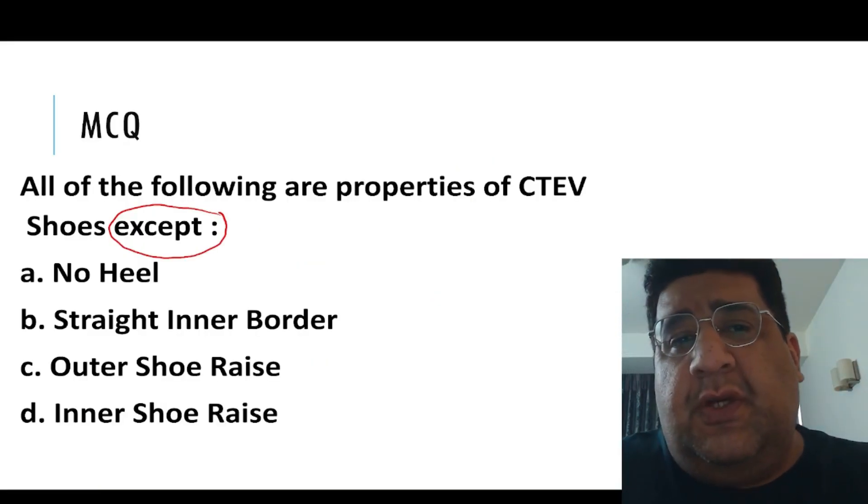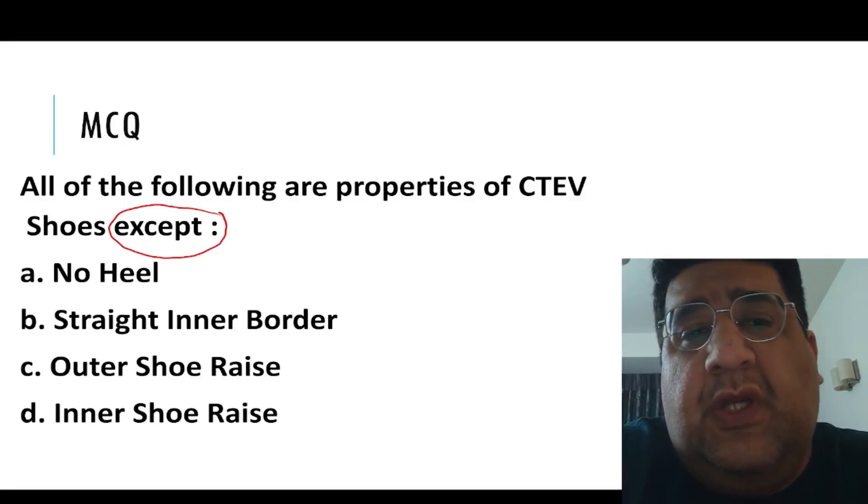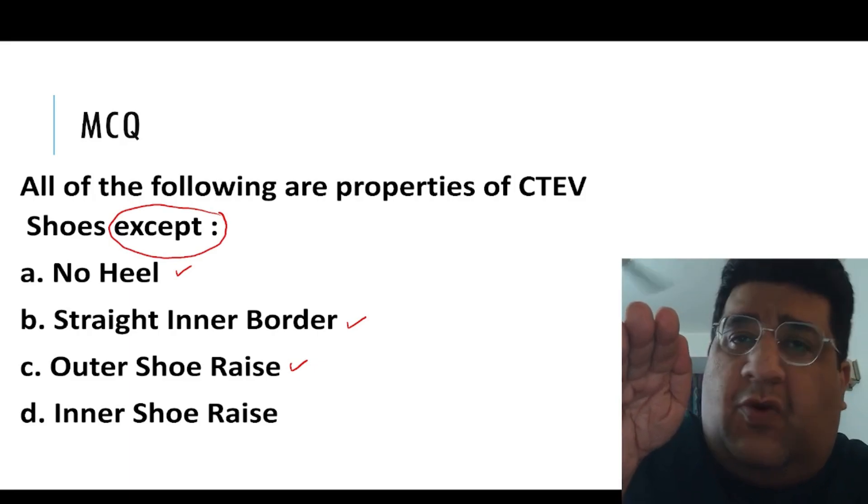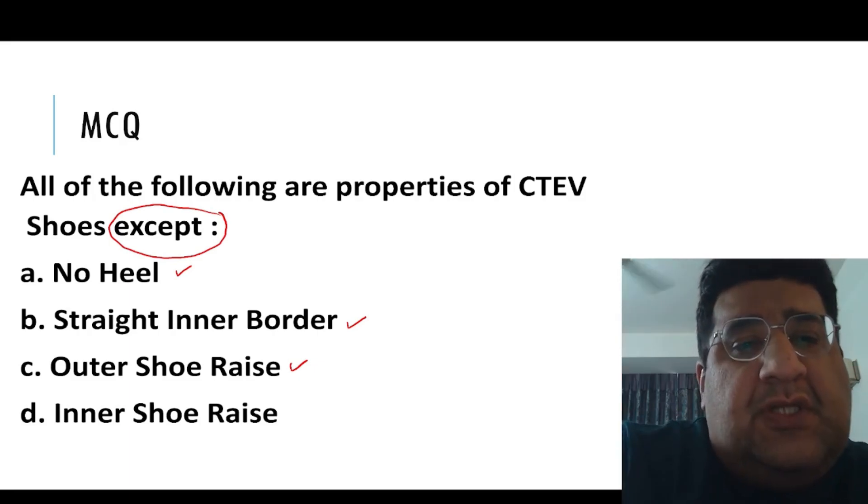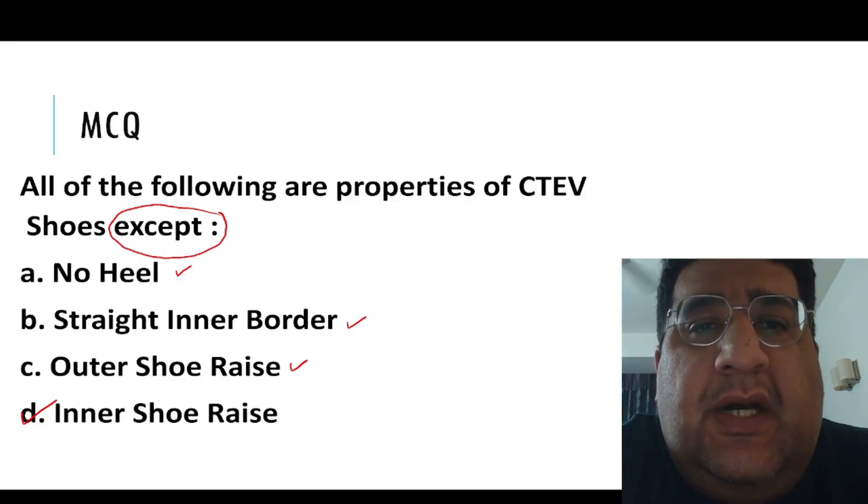Now if we go back to the question, they asked which is NOT a property of CTEV shoe. Well, no heel is a property. Straight inner border is a property. Outer shoe raise is a property. We do not have a property called inner shoe raise because inner shoe raise will lead to inversion. So this is certainly not a property, and therefore D is the correct answer.